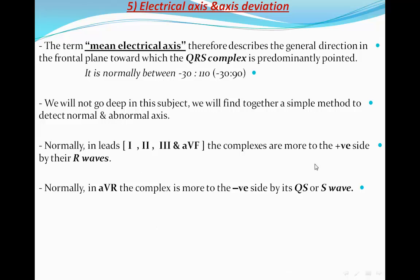The electrical axis and axis deviation: the term mean electrical axis describes the general direction in the frontal plane toward which the QRS complex is predominantly pointed. It is normally from minus 30 to 110 degrees according to some books, or minus 30 to 90 in others — not a big deal. We will find a simple method to detect normal and abnormal axis.